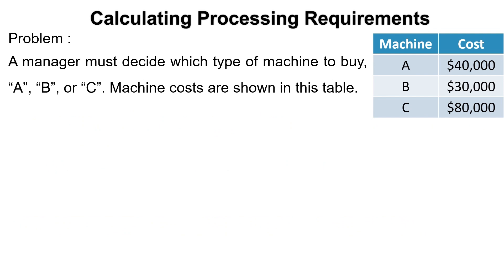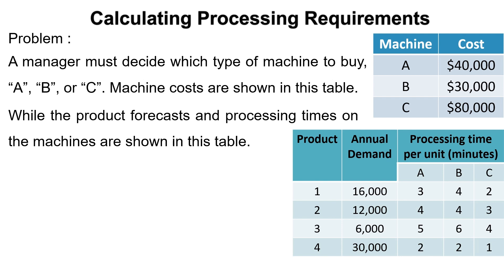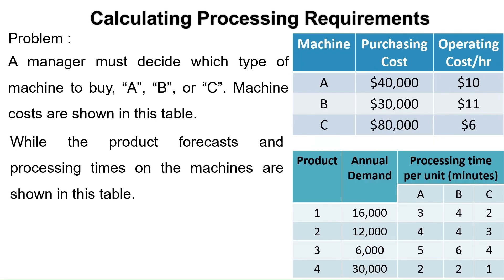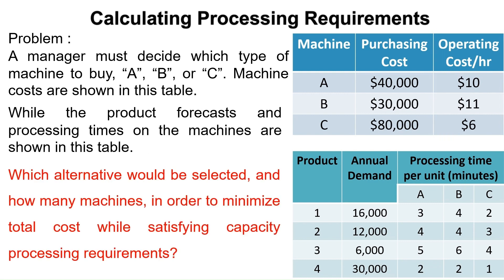In this problem, we learn how to find the number of needed machines given only the purchasing cost. Here, more information is available: the machines differ in terms of hourly operating costs. Machine A has an hourly operating cost of $10 each, machine B has $11 each, and machine C has $6 each. Which alternative would be selected and how many machines, in order to minimize total cost while satisfying capacity processing requirements?